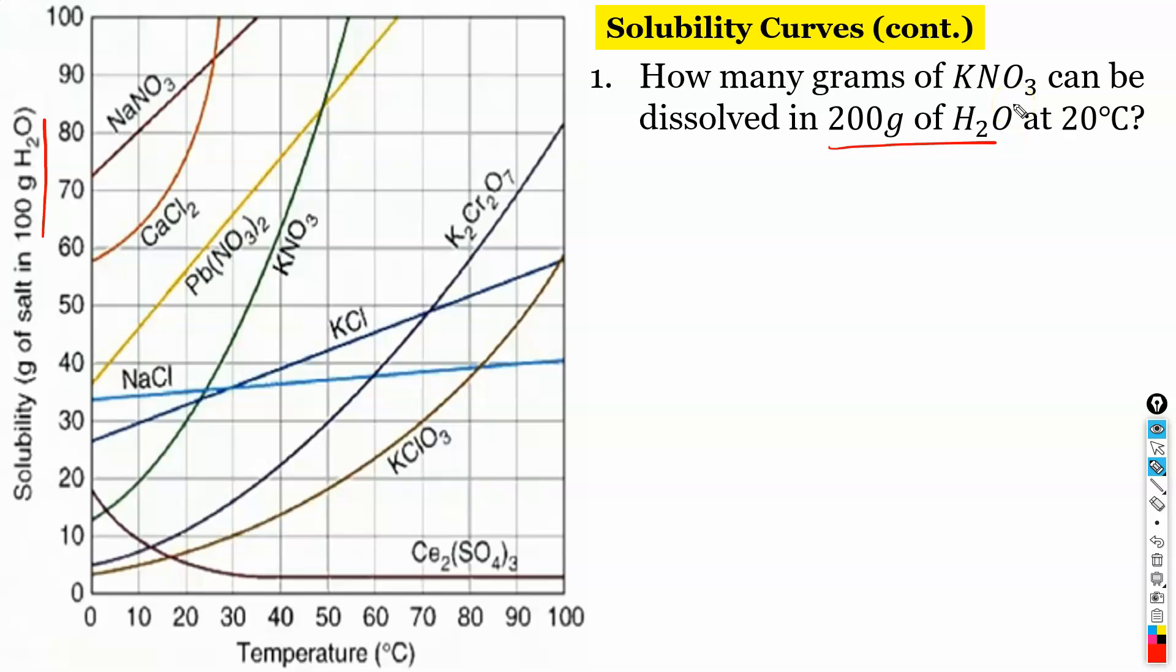Well let's see how many we have at 100 grams. So here's 20 degrees. KNO3 is this curve right here. Okay so let's go up right here. And then go over. So we can do 30 grams in 100 grams of water.